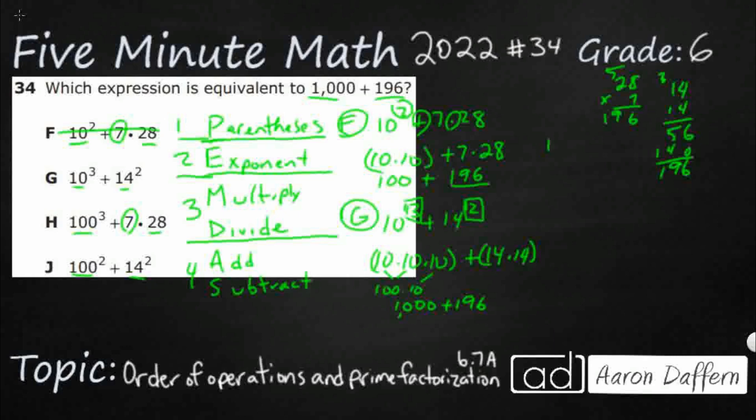Wow. Look at H. I can already tell you H is going to have problems. 100 cubed plus 7 times 28. I can already tell you that 7 times 28 is 196. So that's good. Because we did that right here. So what does 100 cubed mean? It means 100 times 100 times 100. So 100 times 100 means you get four zeros. And then you multiply that by another hundred means you're going to get three. Wow. A million. Okay. So H is incorrect. Way too many zeros.